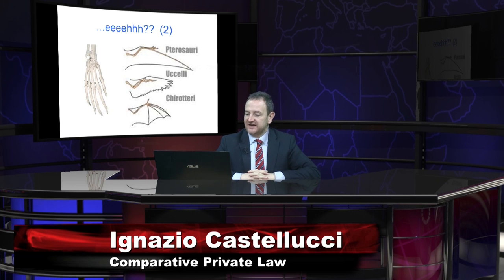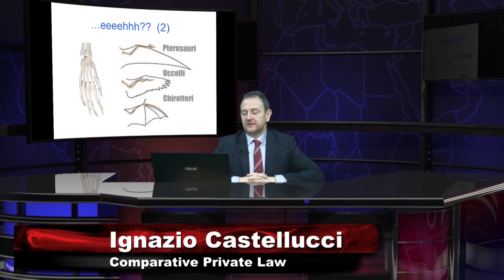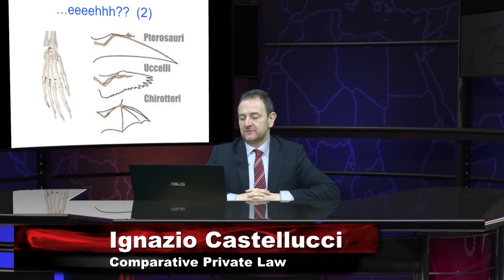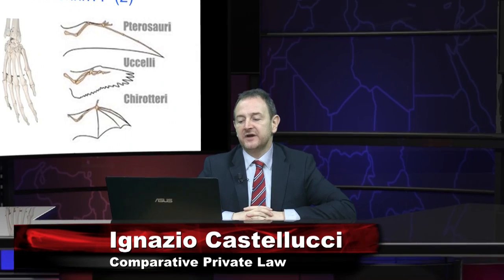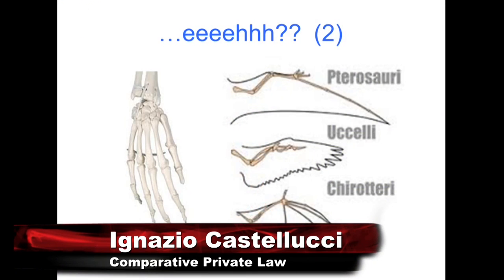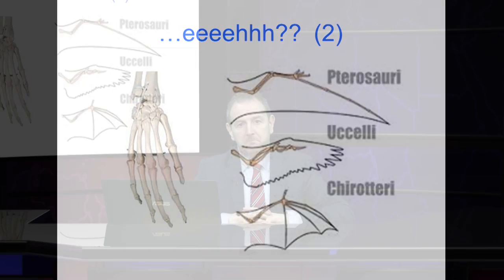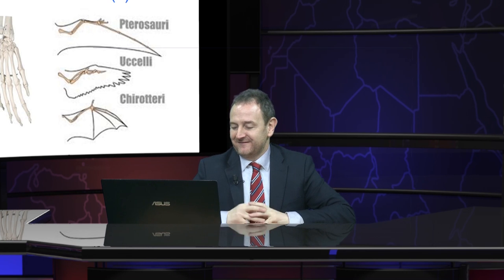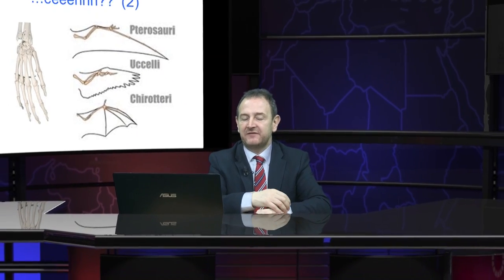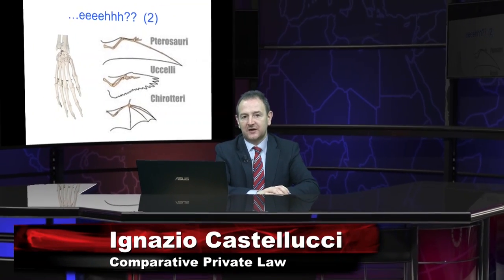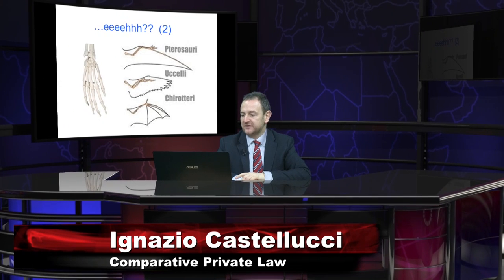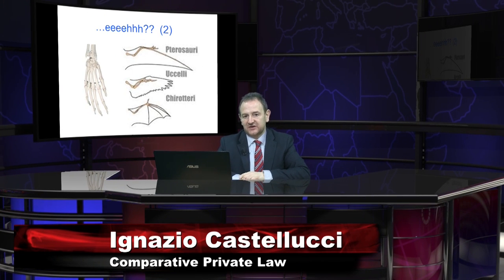We can see from the second slide that we have corresponding structures here — a human hand, and wings from bats, birds and dinosaurs. In this case, the structure is the same in the sense of bones and anatomy. It's clearly the same element having evolved in different ways, according to the different needs of the owners. But basically they have different functions, while remaining the same structural elements.